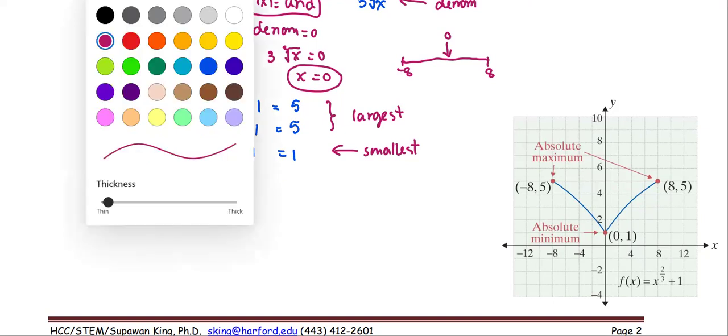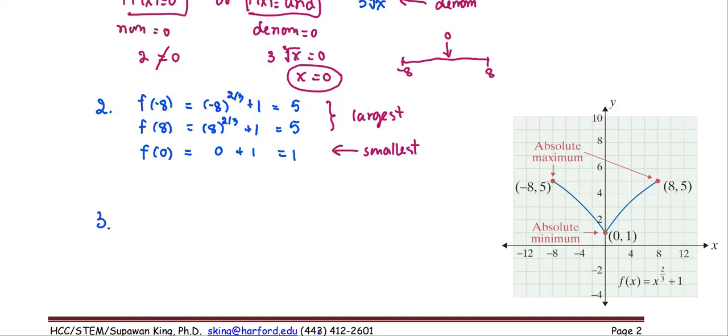So we can say that the absolute maximum value is the function value at negative eight,